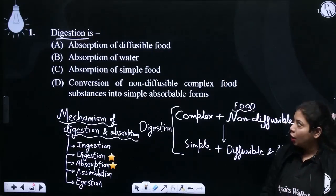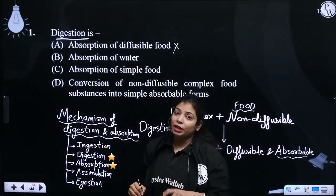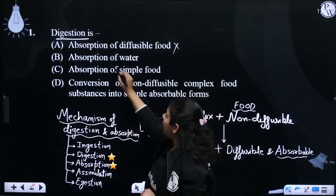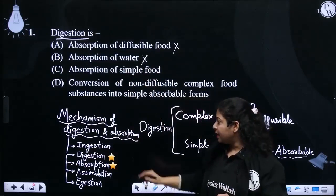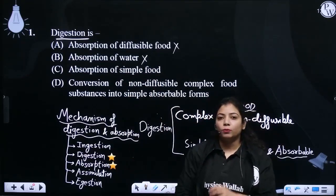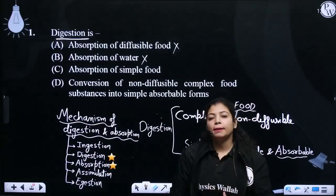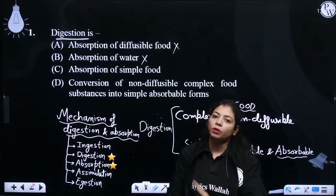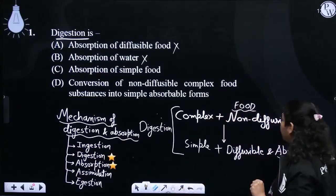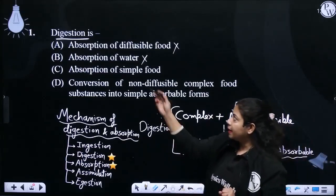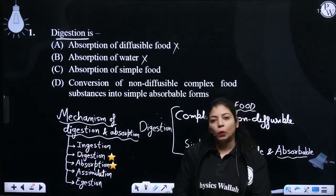Digestion के बाद absorption होता है, तो digestion is absorption of diffusible food — no। Absorption of water भी बिल्कुल नहीं। Digestion और absorption, mechanism of digestion and absorption के अलग-अलग steps हैं। Digestion और absorption अलग-अलग steps हैं, तो बच्चा केवल absorbable word की वजह से confused हो सकता है — उसको लग सकता है कि digestion के अंदर absorption हो रहा है। बच्चे को बताना है कि digestion और absorption बिल्कुल different processes हैं।